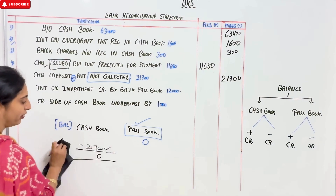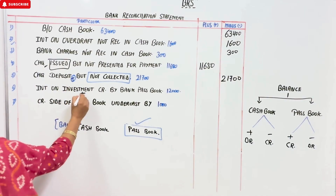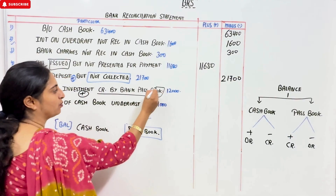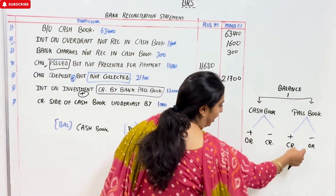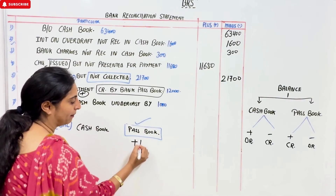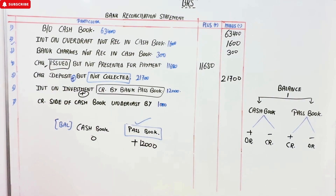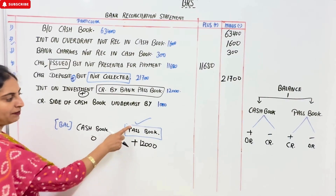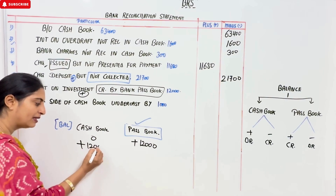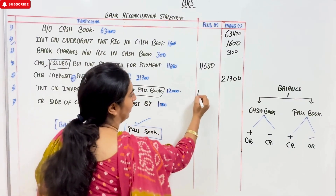Next: interest on investment, which is plus — as opposed to interest on overdraft which was minus. Credit paid by bank, pass book — buying pass book credit means plus. Pass book means bank, and they are saying it is plus here. There is no opposite element — it means zero in cash book. So pass book is plus. I will do the same method — so this will go to the plus column.